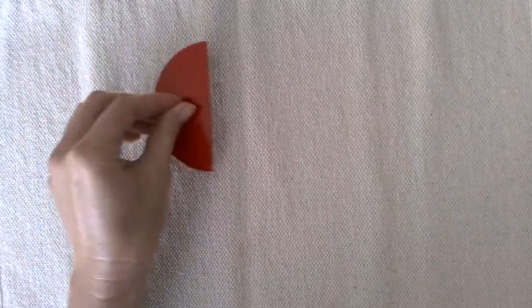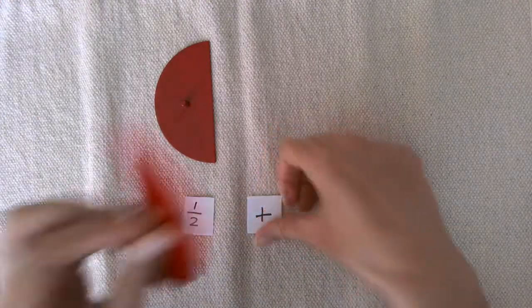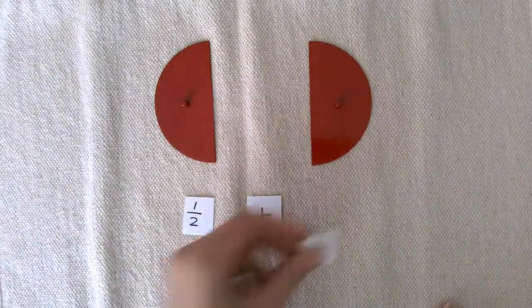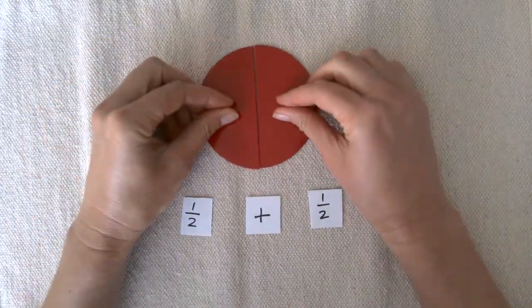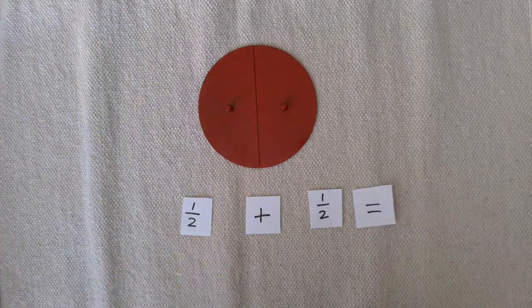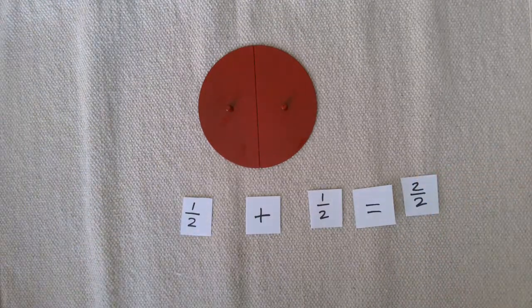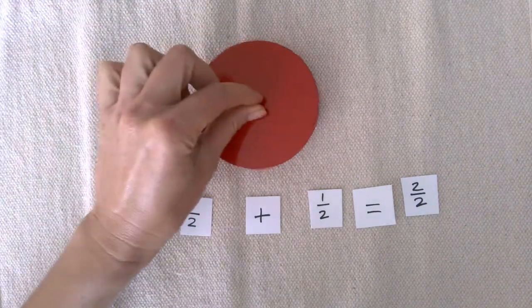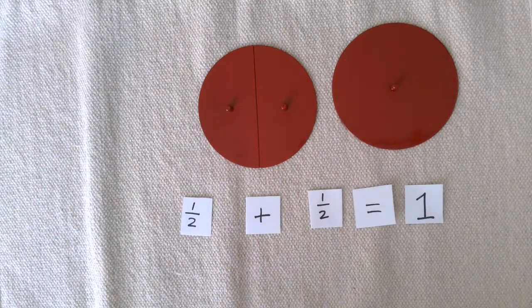That's right, we put things together. So here I have one half and one half. When I put them together, what does that equal? That's right, that equals two halves. We can also say that it equals one whole.